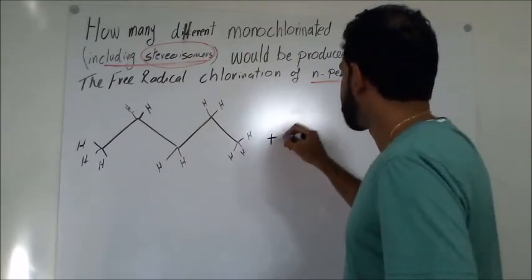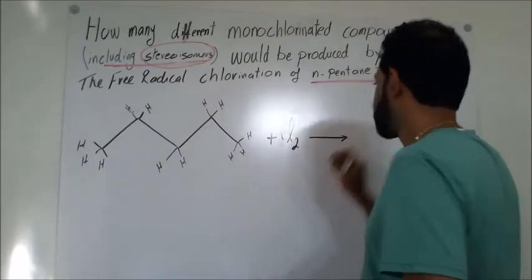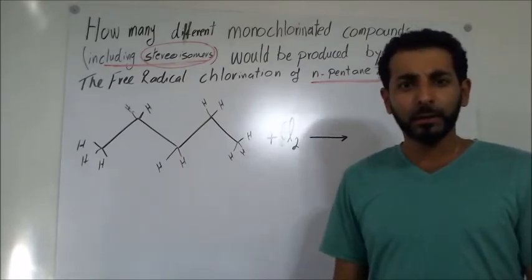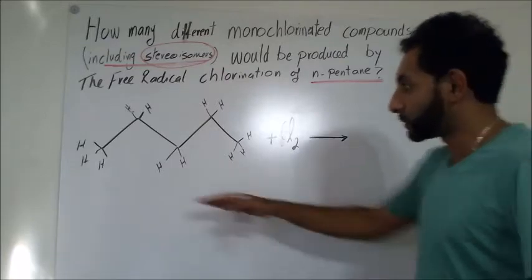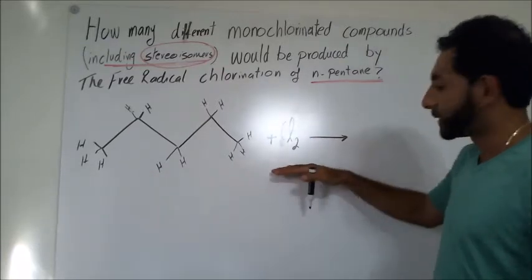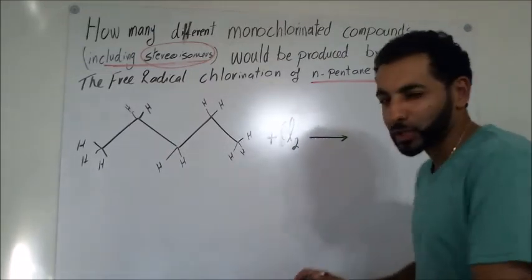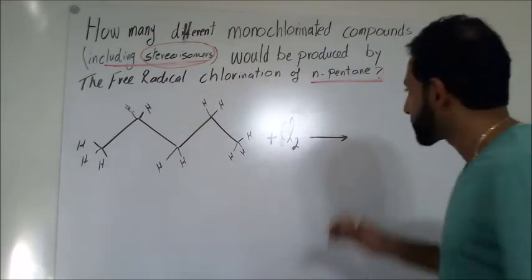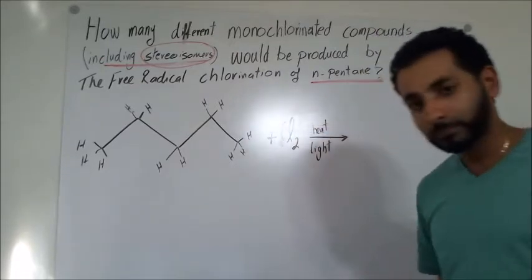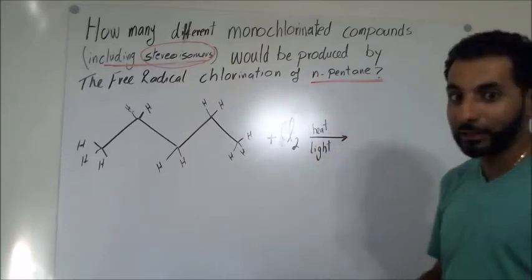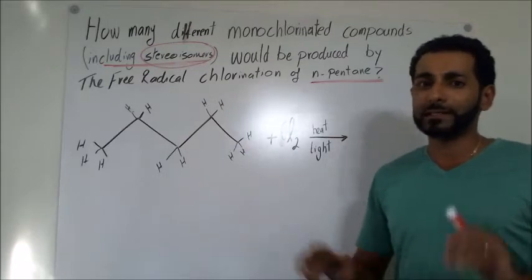If I add Cl₂ to this alkane, there will be no reaction, because I need energy to drive this reaction. The alkane is very stable, and Cl₂ is very stable. No reaction will happen unless the reaction is run under free radical conditions — heat or UV light. This energy vibrates the chlorine atoms and breaks the bond between them to create two free radicals, and the reaction proceeds from there.